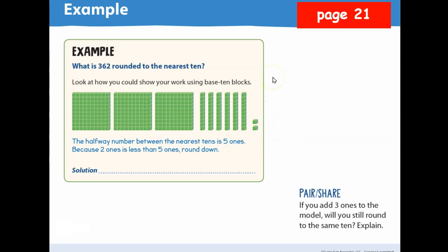And then how many ones? Two. It says the halfway number between the nearest tens is five ones. If I have on a number line from zero to 10, the middle one is five, right? But because the two is less than five, we round down. I really don't like to say round down. You just leave it the same. There's no change.